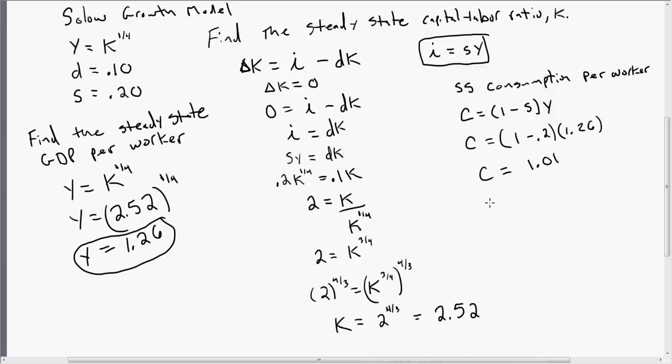And finally, one last thing we can get is the steady-state investment per worker. So SS, steady-state investment per worker. We're just going to go back up to this top equation here, where I equals S times Y.